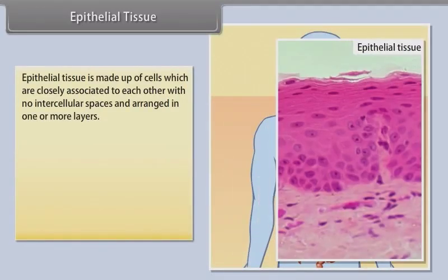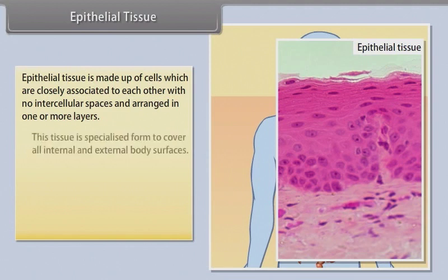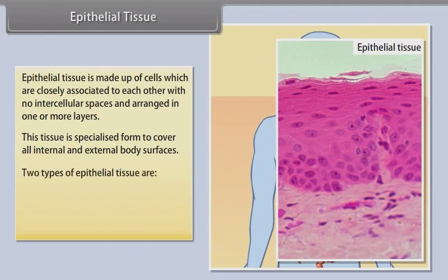Epithelial tissue is made up of cells which are closely associated to each other with no intercellular spaces, and arranged in one or more layers. This tissue is specialized to cover all internal and external body surfaces. The two types of epithelial tissues are simple epithelium and compound epithelium.